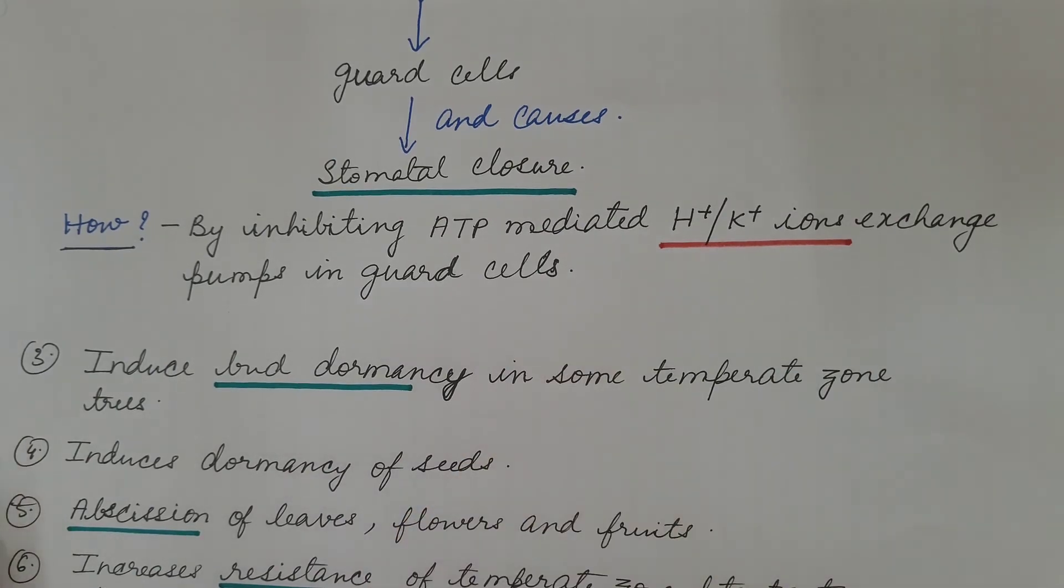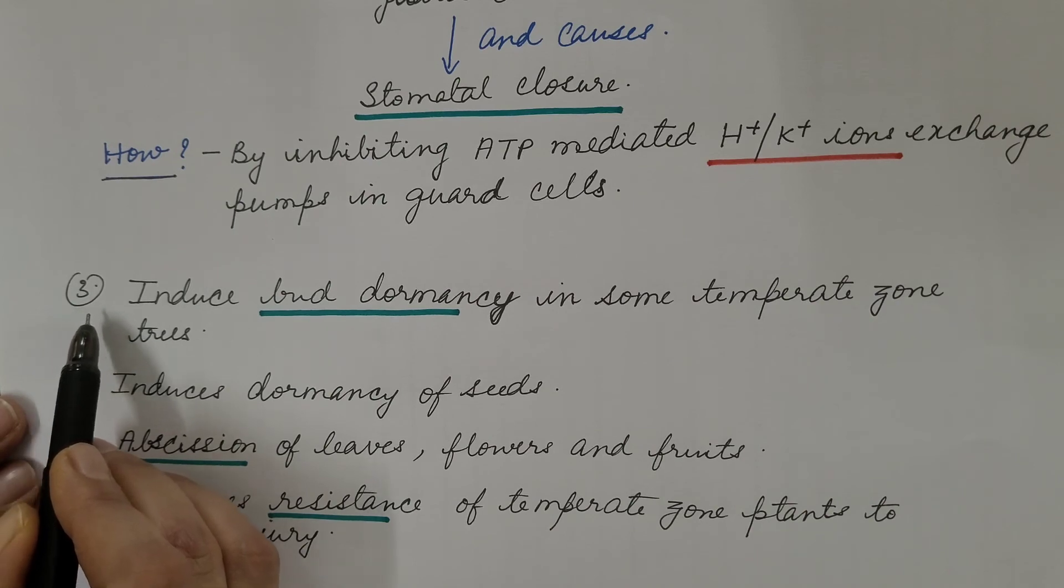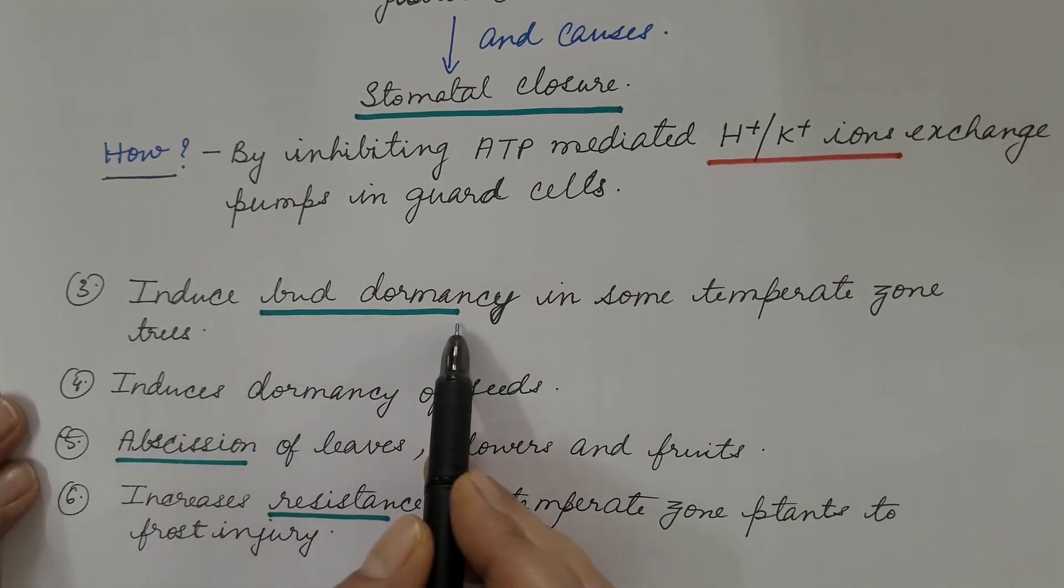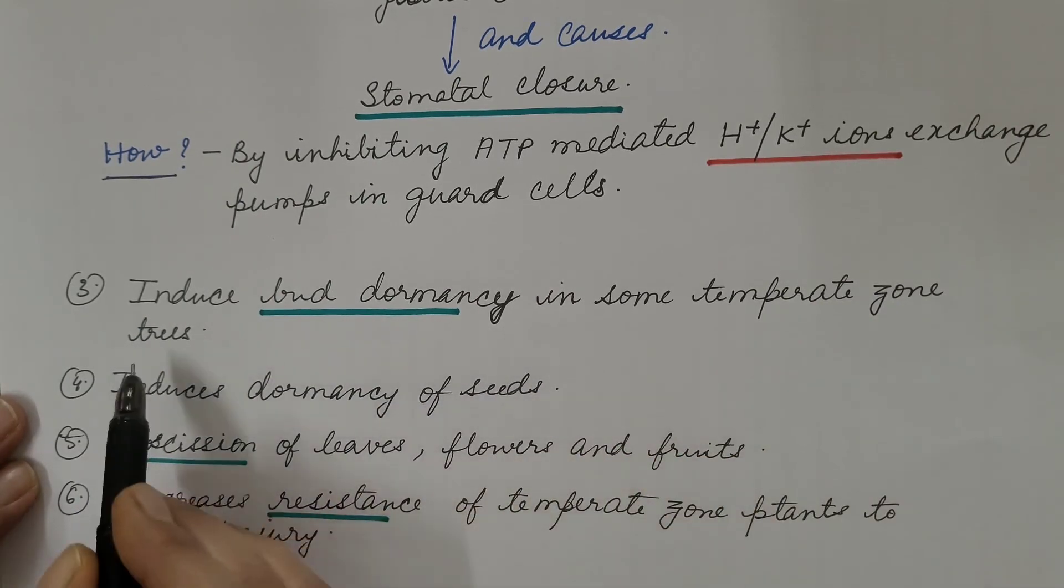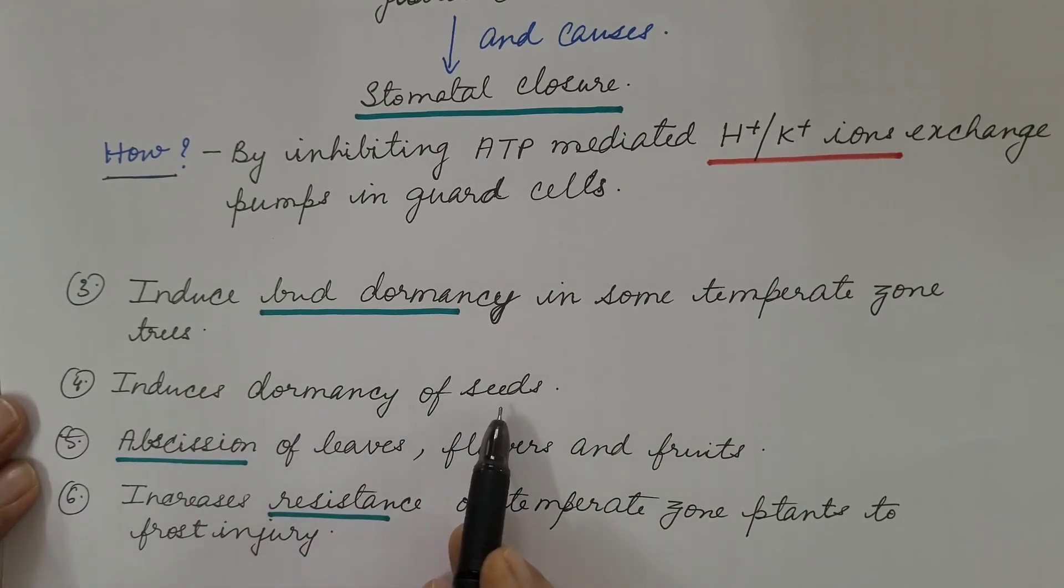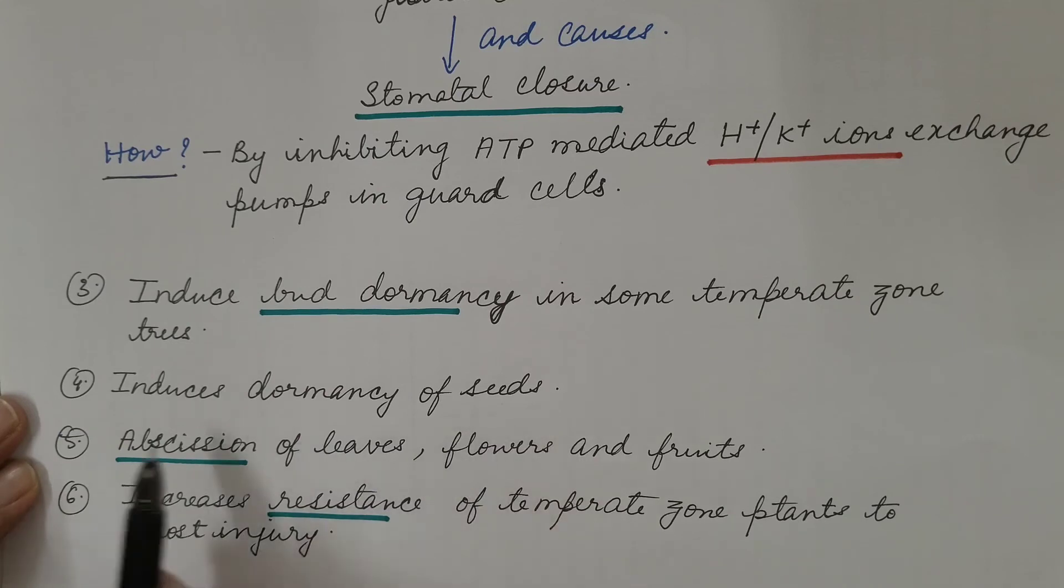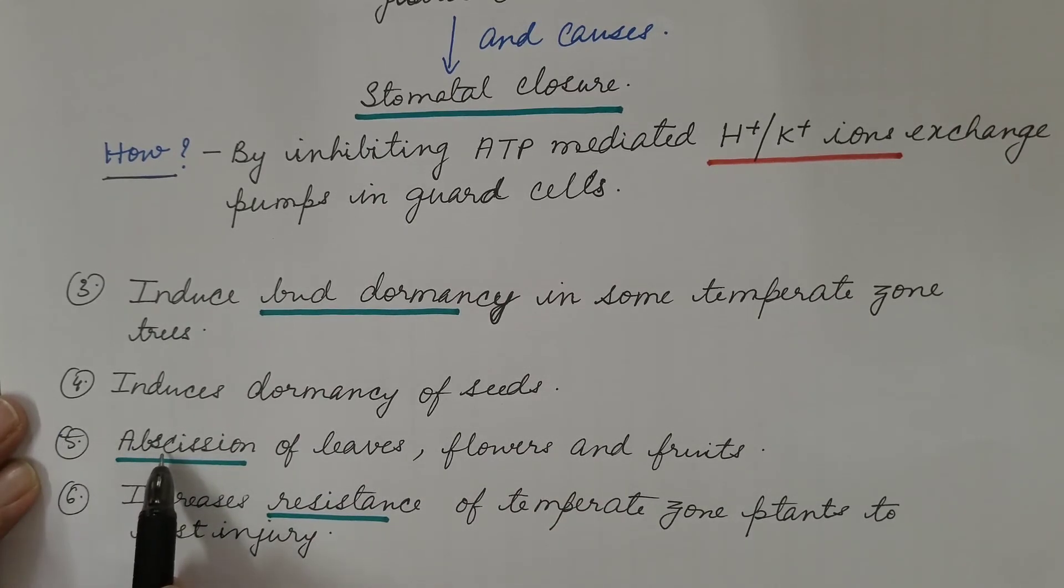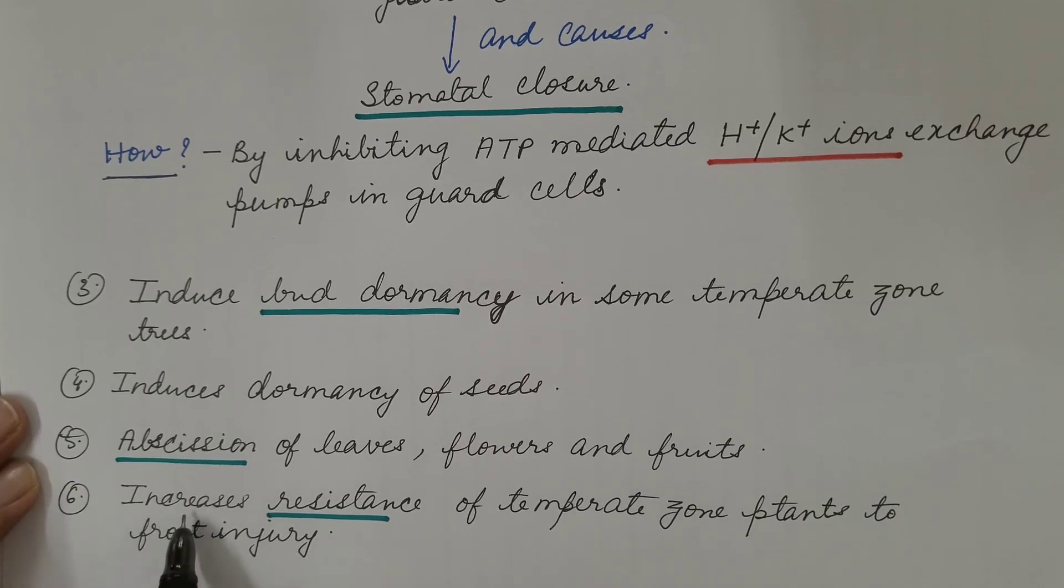Now some other physiological effects. Third, it induces bud dormancy in some temperate zone trees. Fourth, it induces dormancy of seeds during unfavorable conditions. Fifth, abscission of leaves, flowers, and fruits. Sixth, it increases resistance of temperate zone plants to frost injury.